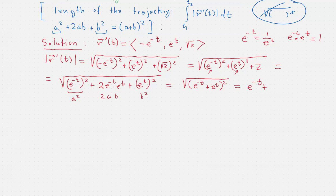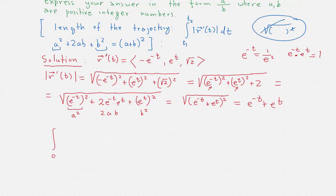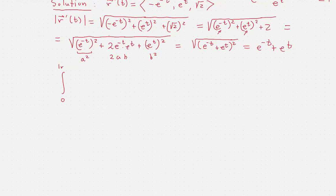And that's it. This is quite doable now. So we have to go from 0, that was the first point in time, to ln(3), of e^(-t) + e^t. The antiderivative is pretty straightforward to find.